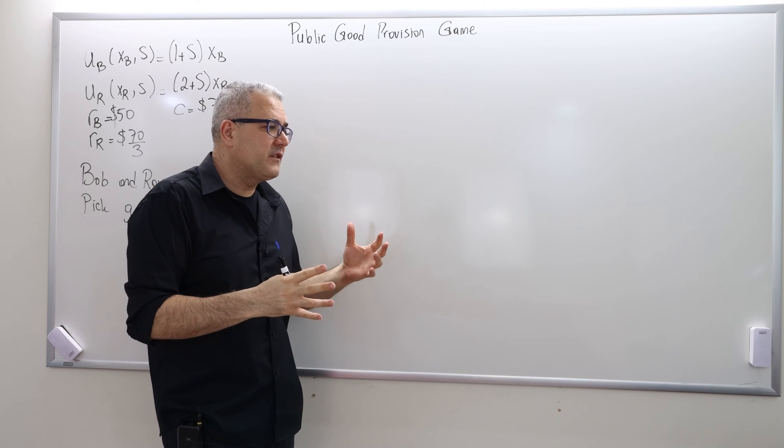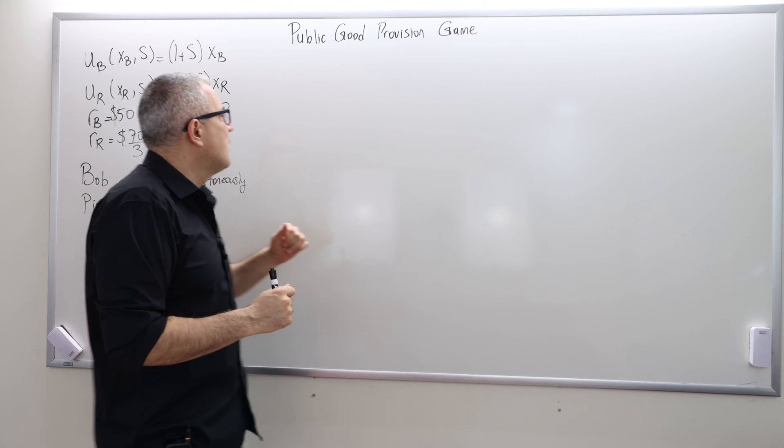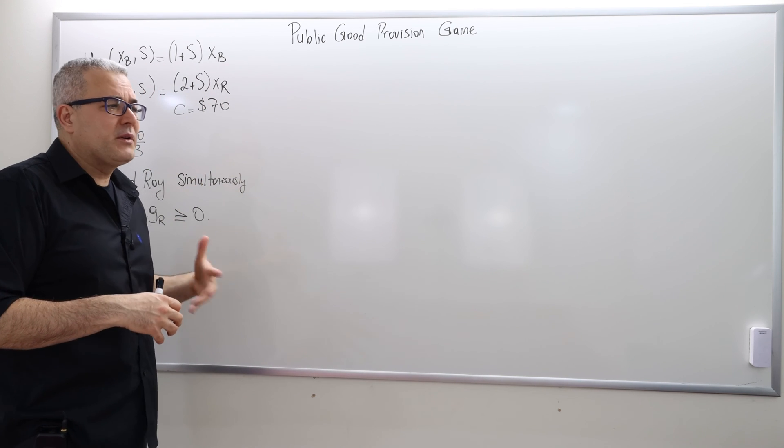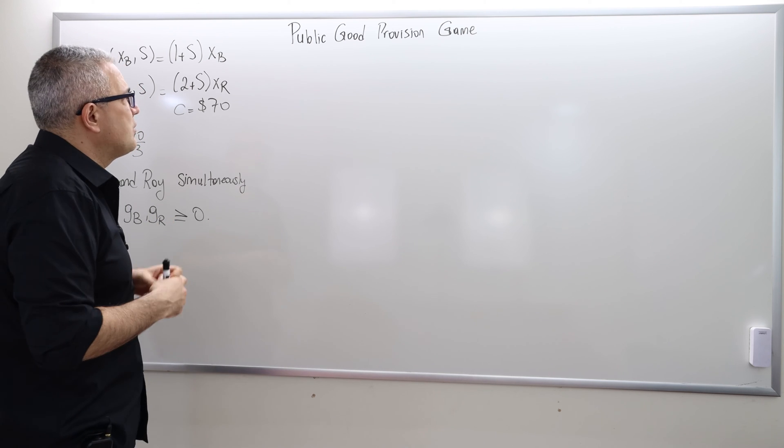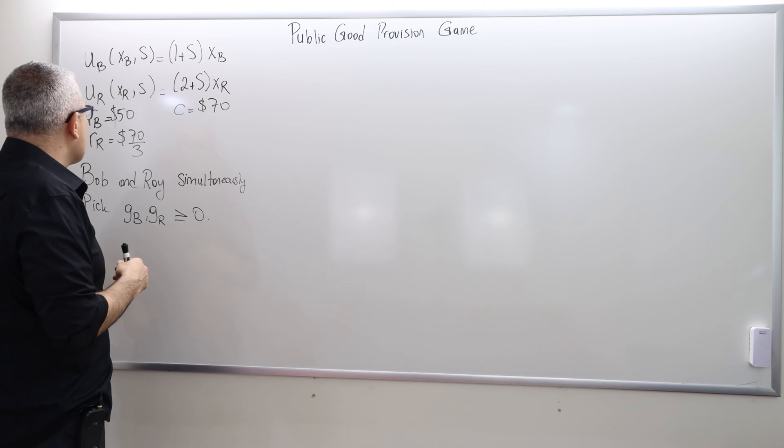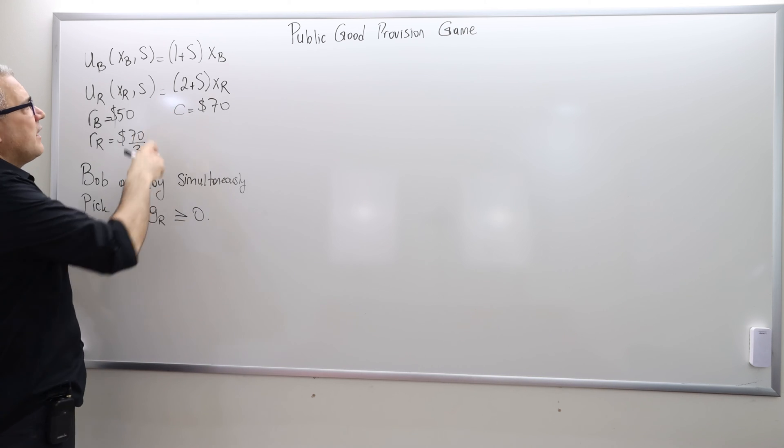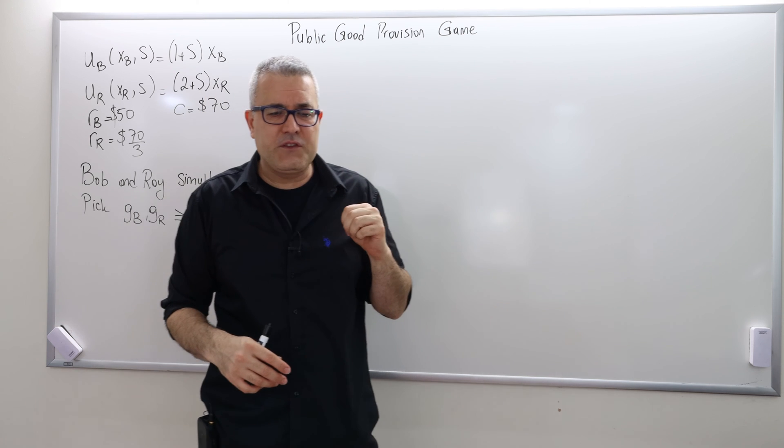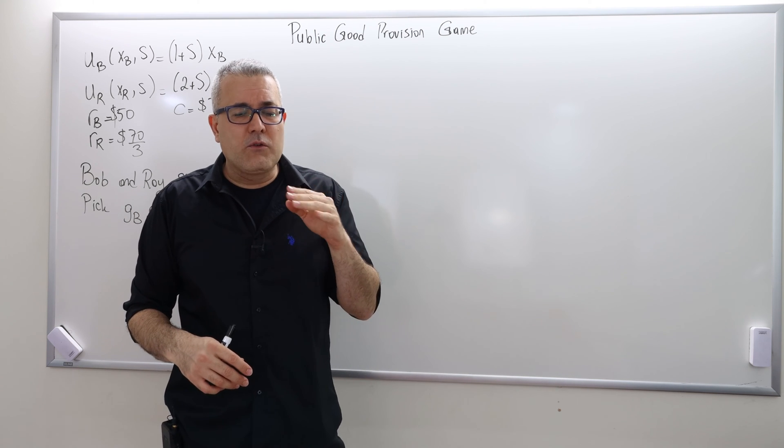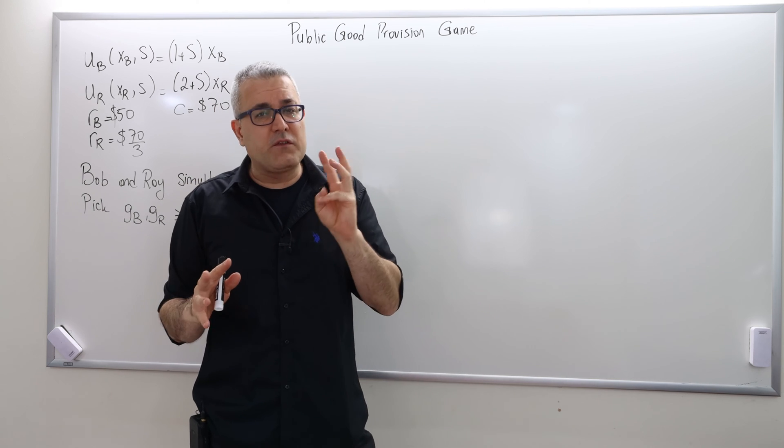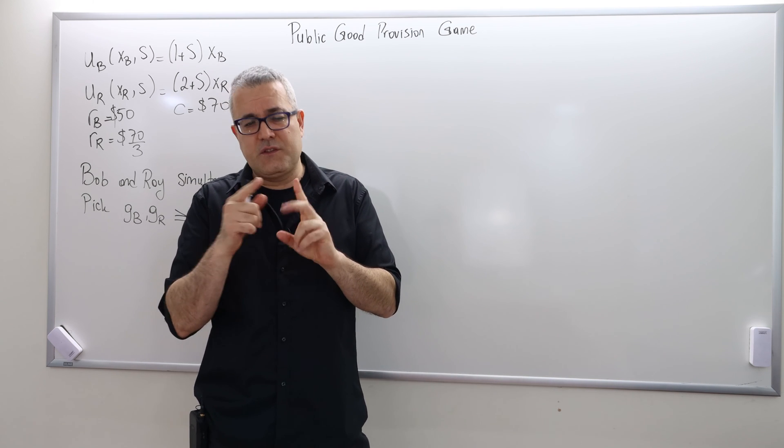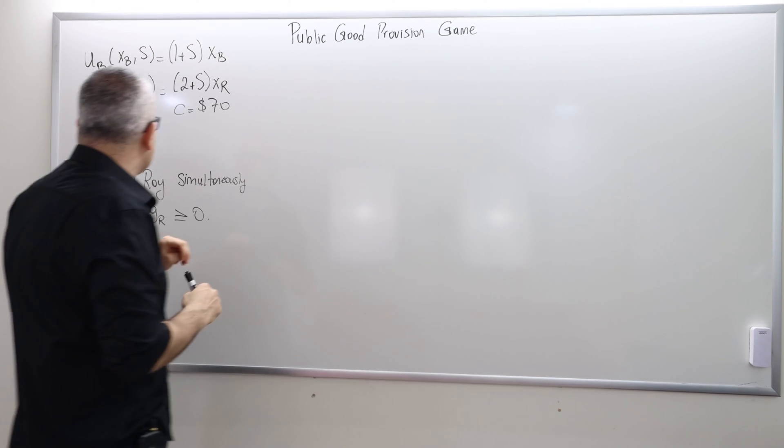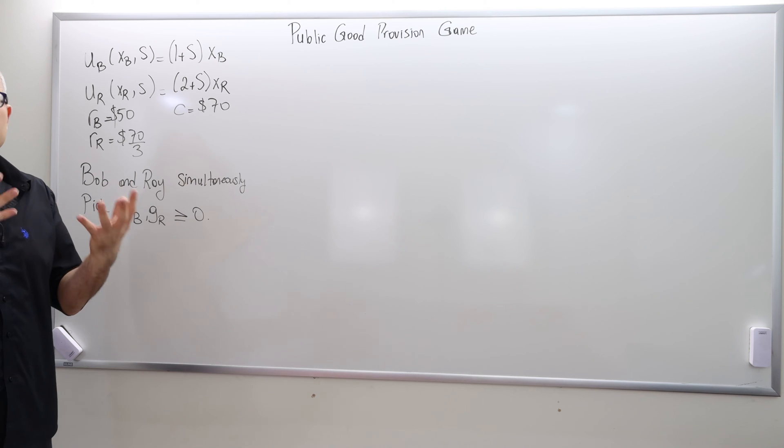But another alternative to decide how to split the cost of public good is what I call public good provision game. So these two agents basically play a game. So let's define the game and then let's discuss what the potential or possible equilibrium or solution of this game might be. So here's the game. We already discussed game theory in our previous chapter. In order to define a game, we need to have three things. One, the agents. Two, the set of strategies. And three, the payoffs.